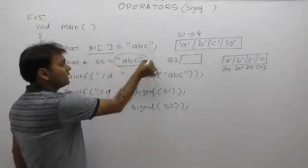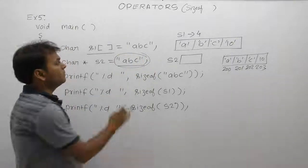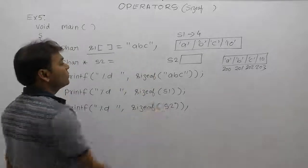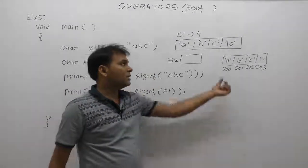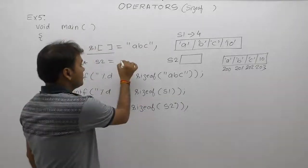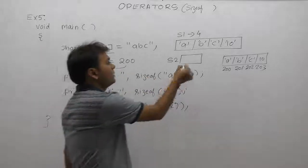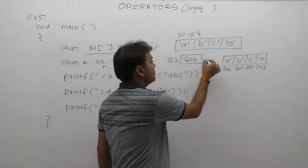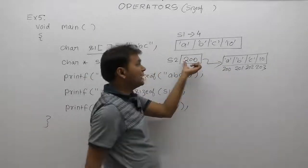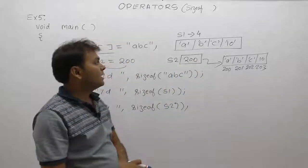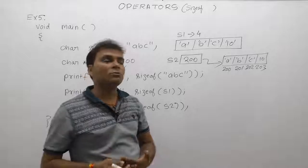The ABC string is created separately in the data segment. The string's base address, let's consider 200, is copied into s2. s2 stores an address, which is an integer type of content. That's the reason a pointer will take always 2 bytes, so s2 is 2 bytes.